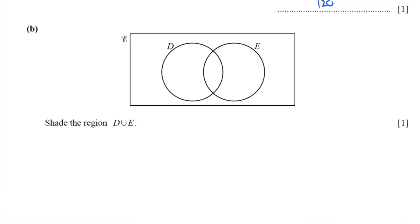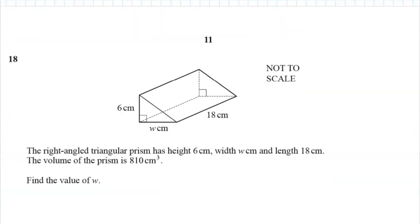Shade the region D union E. Union means like an or. All of D and all of E. That's the union of the two things. We put them together. We take all of D. We take all of E. And we say shaded. Thank you for the mark.